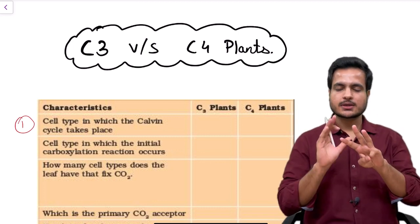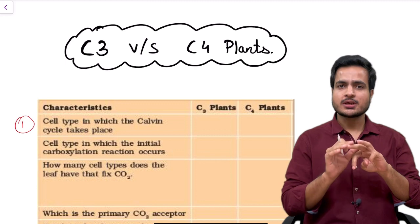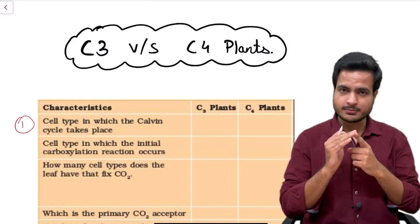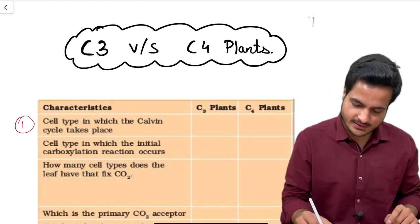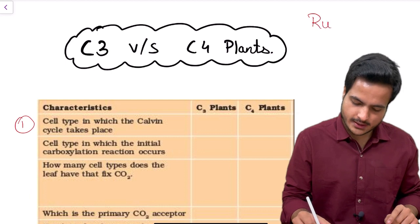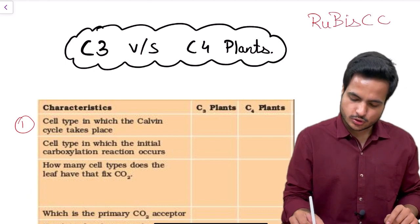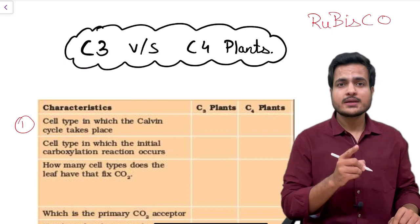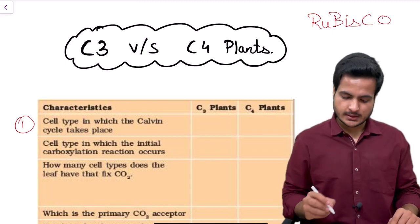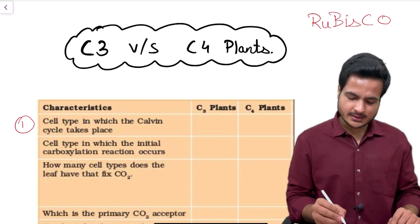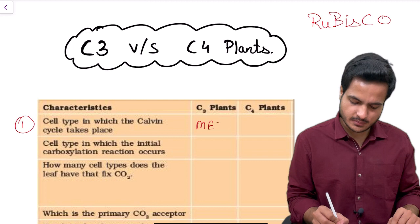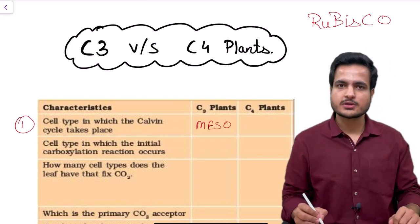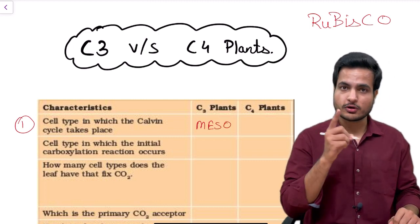Calvin cycle has 3 steps: carboxylation, reduction and regeneration. This carboxylation step, the first step, requires an enzyme called Rubisco. So wheresoever we have this enzyme Rubisco, there this Calvin cycle will take place. In C3 plants, Rubisco enzyme is present in mesophyll cells. Therefore, Calvin cycle occurs in mesophyll cells for C3 plants.